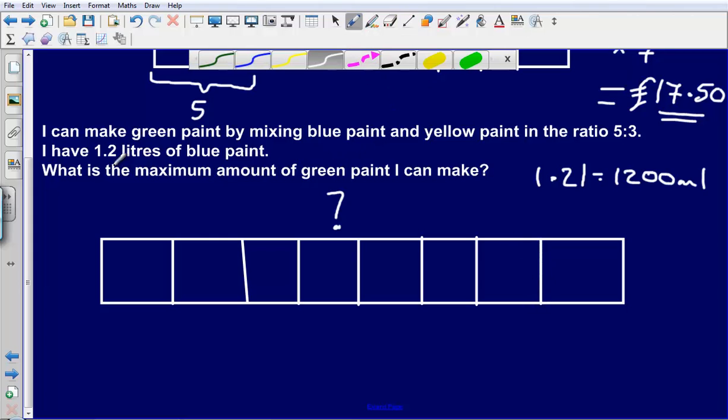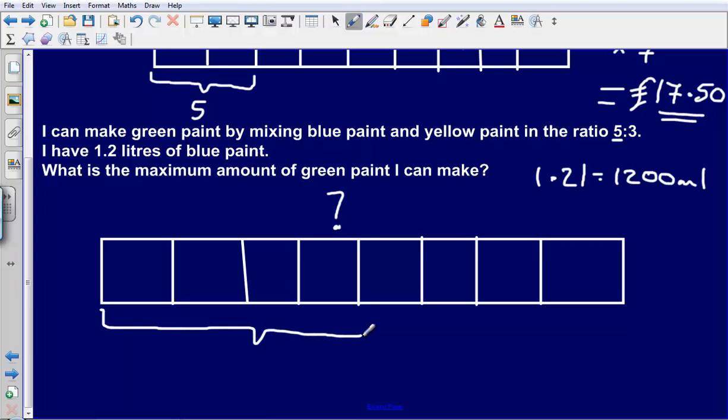We know that we've got 1.2 litres of blue paint, and 1.2 litres of paint needs to make five of the parts. So five of the parts needs to be 1,200 millilitres. Now what we need to figure out is, we've got 1,200 millilitres that needs to make five parts. So we could simply do 1,200 divided by five.